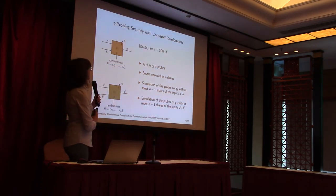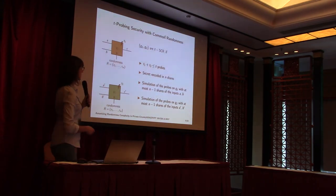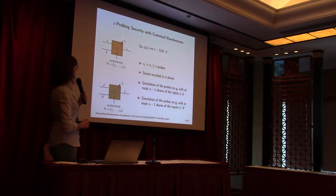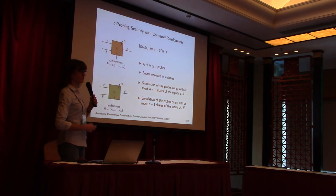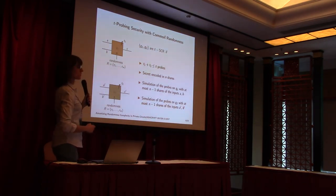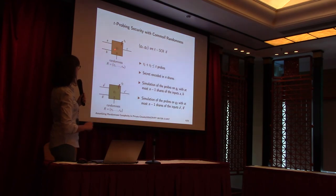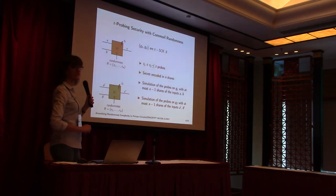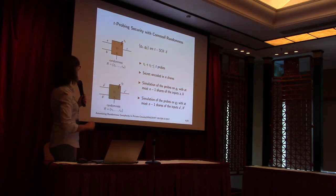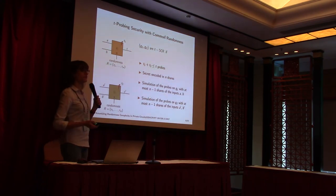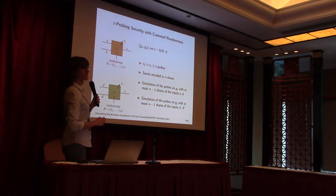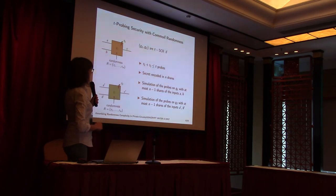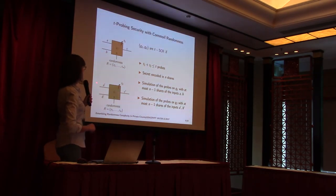Our security definition is a bit different from the previous one because it actually involves a number of gadgets. We will give a kind of global simulation requirement on some gadgets. Here I have an example for just two gadgets which internally use exactly the same randomness R. Saying that this set of gadgets is T-SCR means requiring the existence of a simulator which can simulate the adversary's view on G1 using at most n₁ shares of a and b, and n₂ shares of a' and b'.